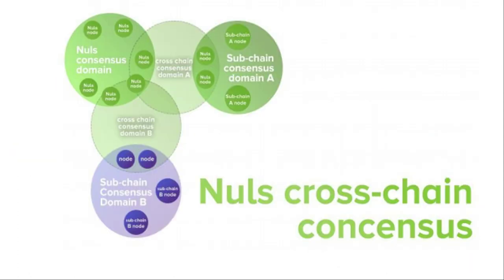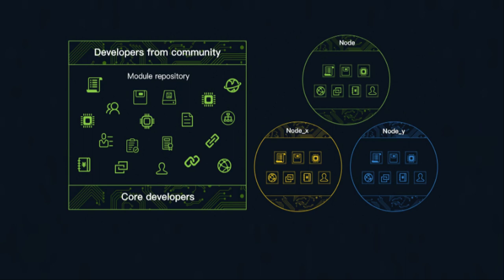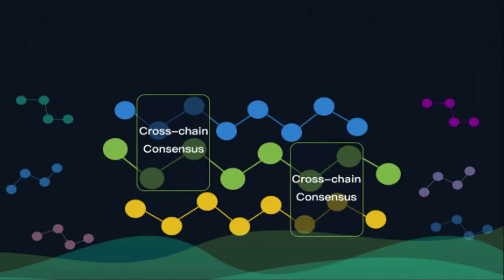Every dApp on NAUS can have their own different consensus algorithm, and NAUS will enable cross-chain consensus for different projects to communicate with one another. There is a cross-chain module that groups nodes on a single sidechain into different groups — yellow, blue, and green. Each yellow node on one chain can then interact with yellow nodes from other chains, blue with blue, and so on. In this way, cross-chain interaction is possible if that module is included in the dApp design.